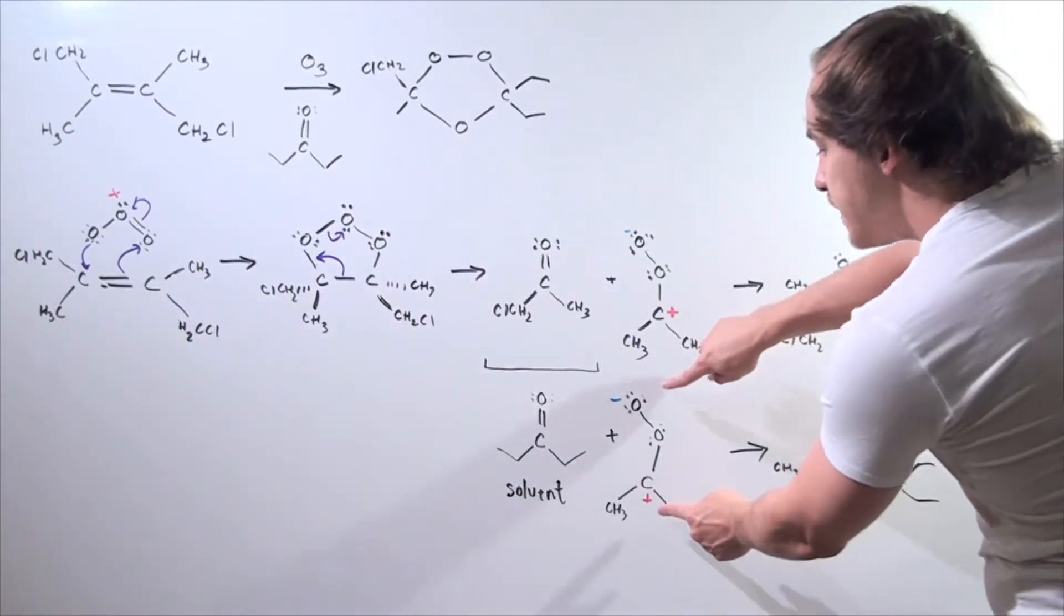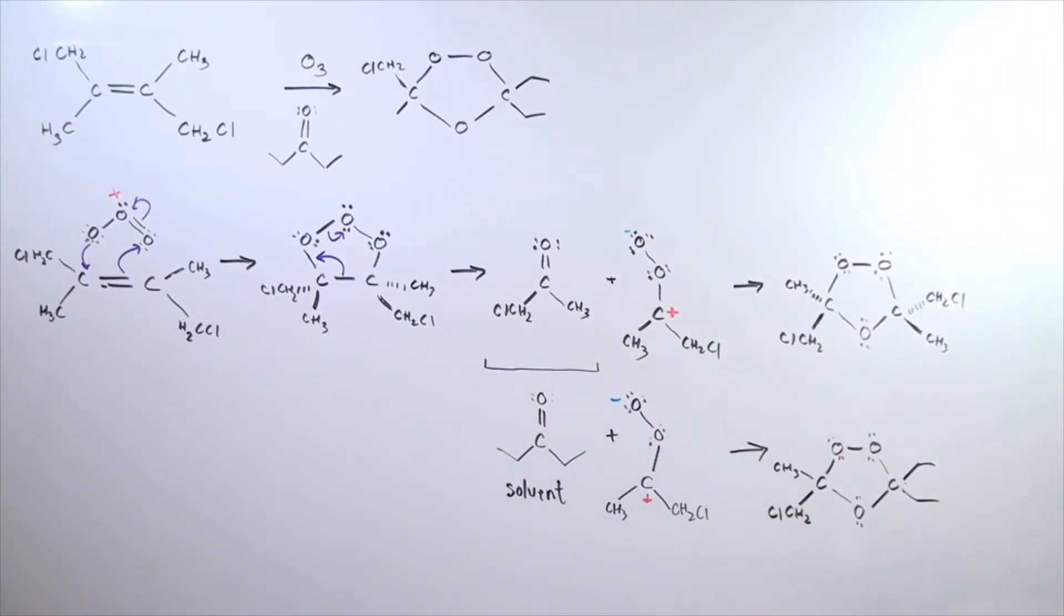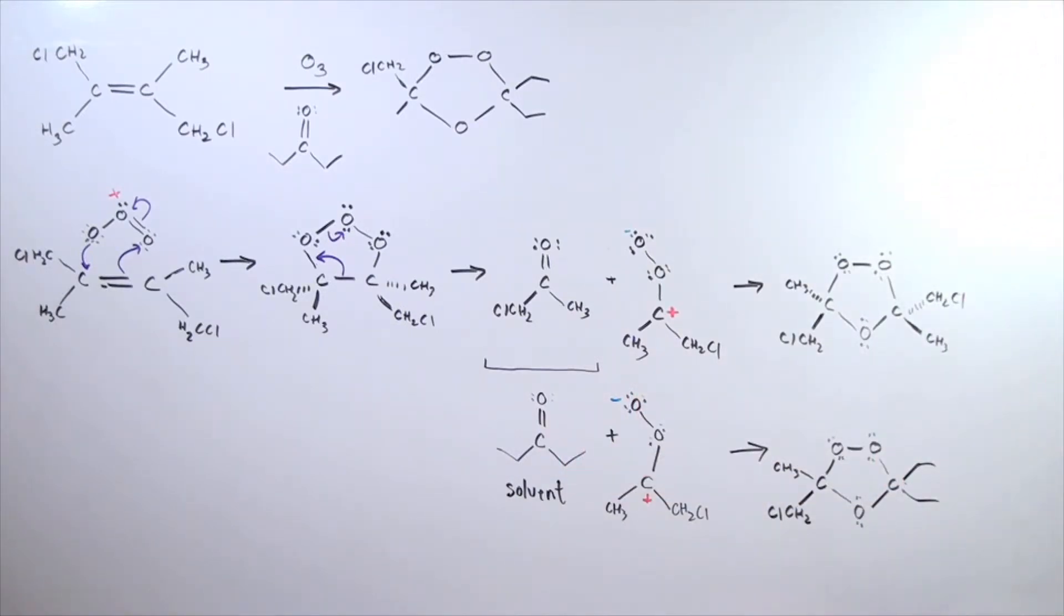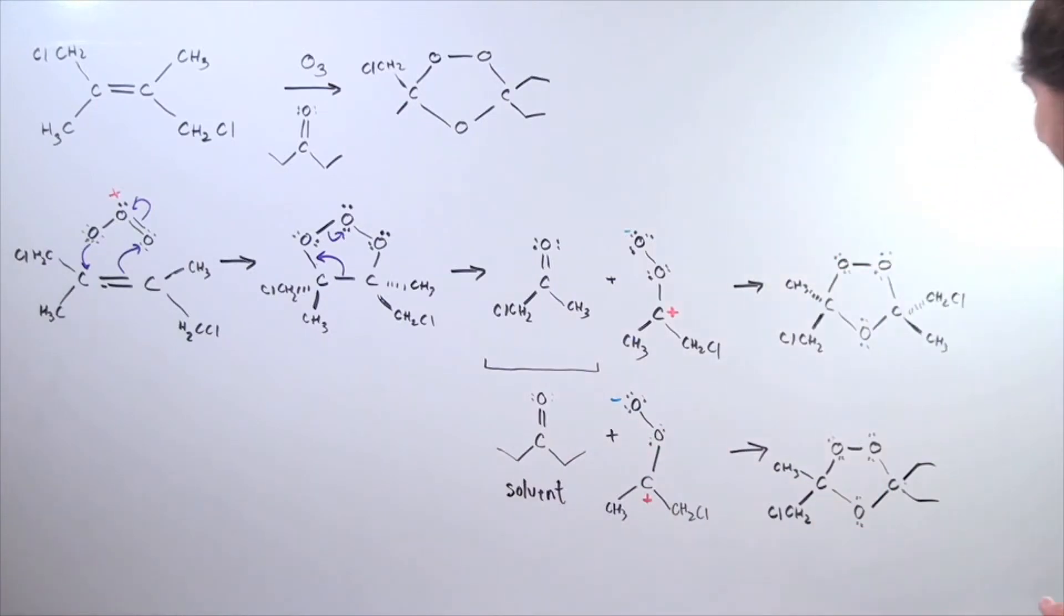Now, if this flips and a 1,3 forward dipolar reaction or ozonolysis reaction takes place, now we have these two ethyl groups that attach to this carbon, and we get the following product, shown here. So our mechanism is as follows.